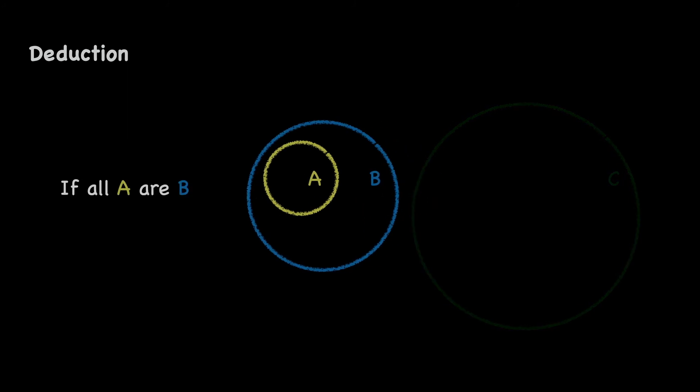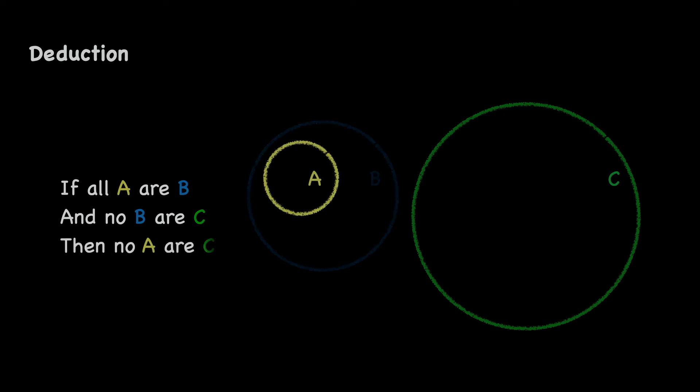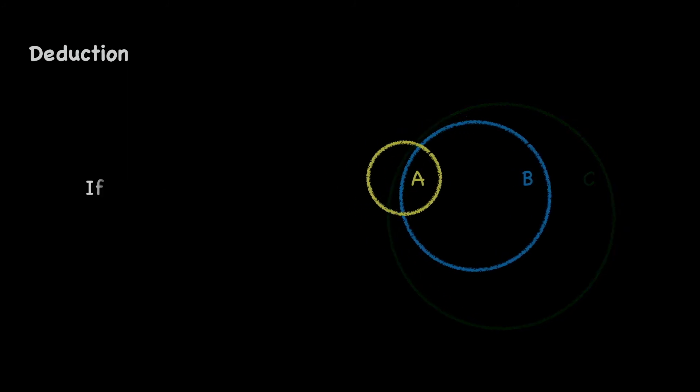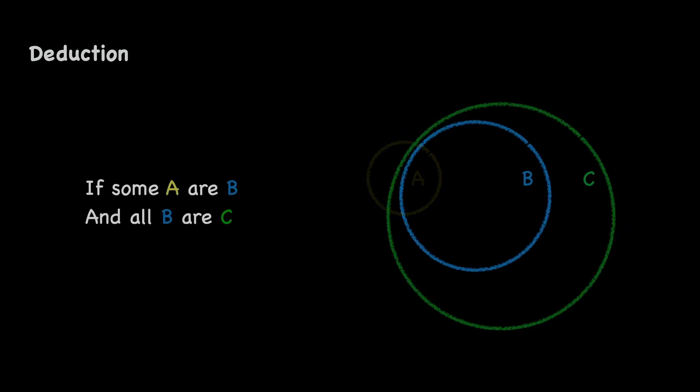If all A's are B's, and no B's are C's, then no A's are C's. If some A's are B's, and all B's are C's, then at least some A's are C's.